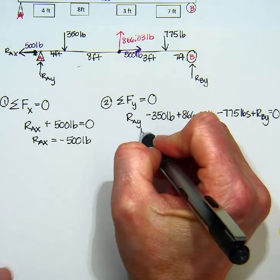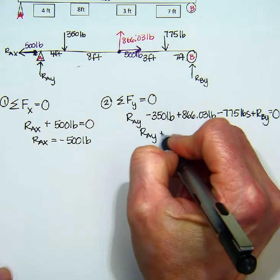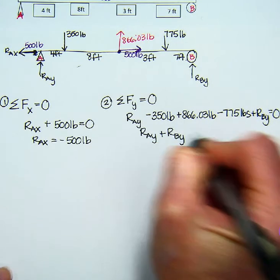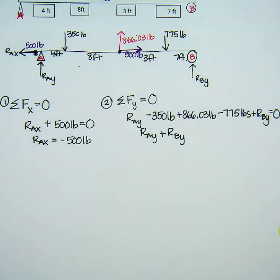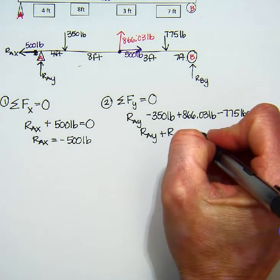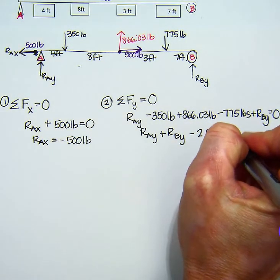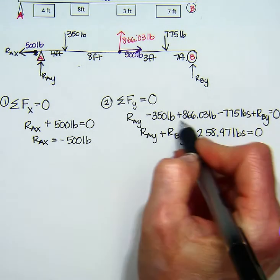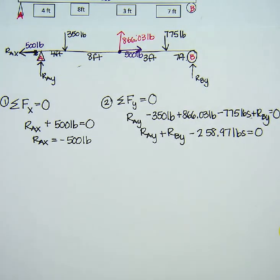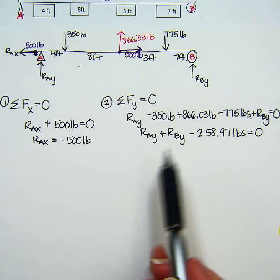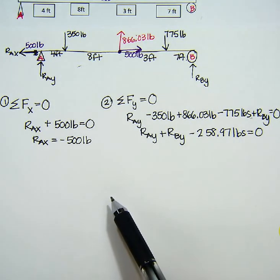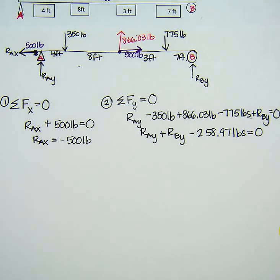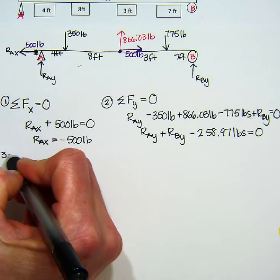So I'm going to go ahead and combine like terms. So I have negative 350 plus 866.03 and then a negative 775. So my answer is negative 258.97 when I combine all of my numbers. But then I'm noticing that I have two variables. And so I need two equations to solve it. So I'm going to need another equation. And that's where step three comes in.